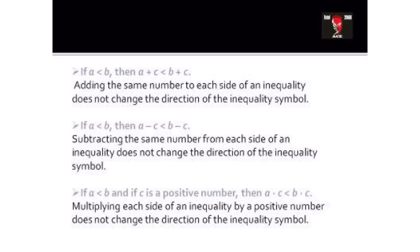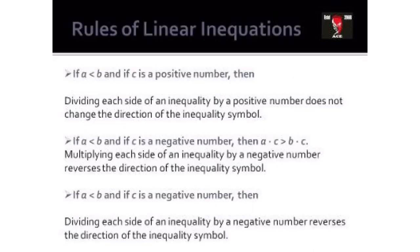The second rule: if the element on the left hand side is less than the right hand side, subtracting the same number from each side will not change the sign of inequality — the sign remains the same. Similarly, when you multiply both sides by the same positive number, the sign of inequality does not change.